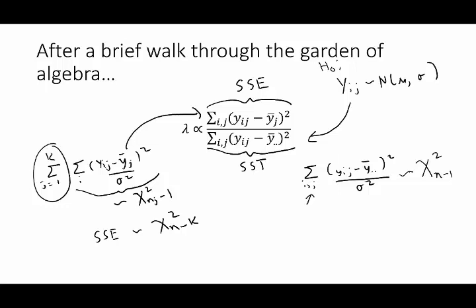So our lambda itself ends up being a ratio of two chi-squared statistics, and that's something we haven't seen before, but which has a very common name distribution called the F-distribution, and that will be the topic that will lead off our next video.